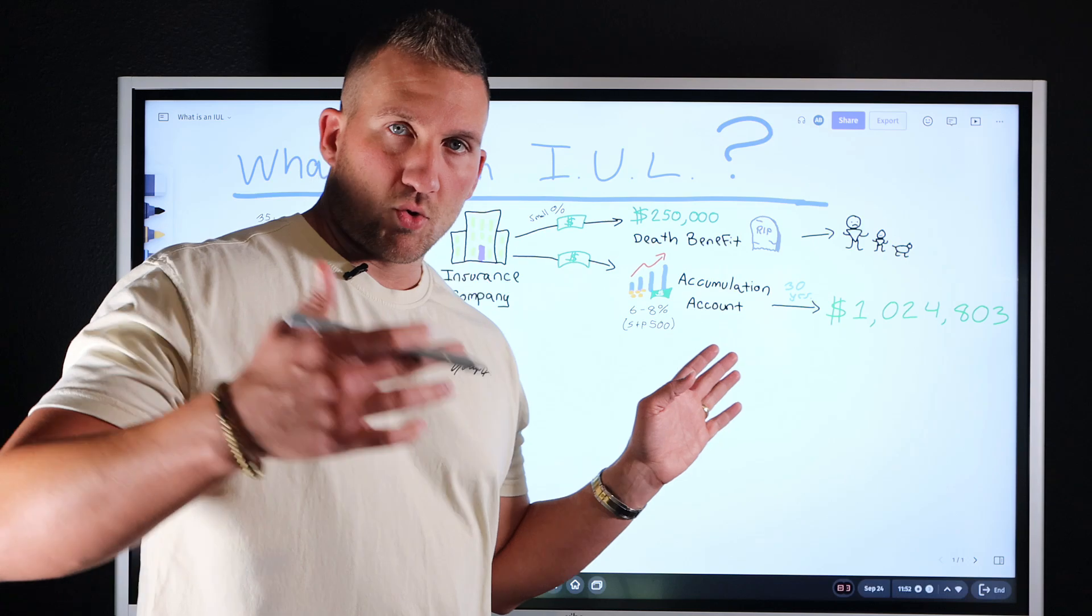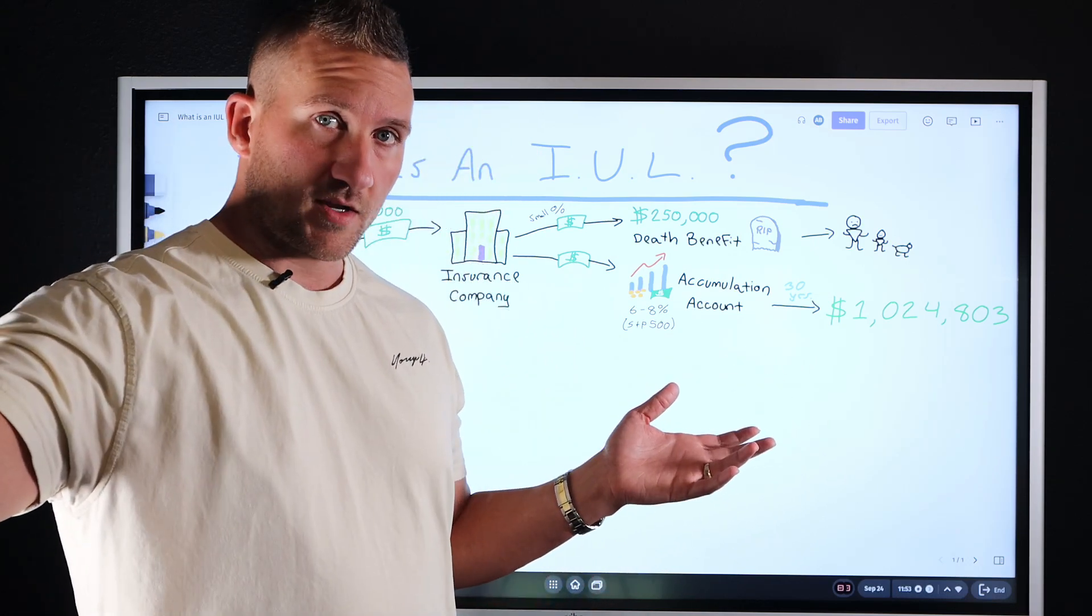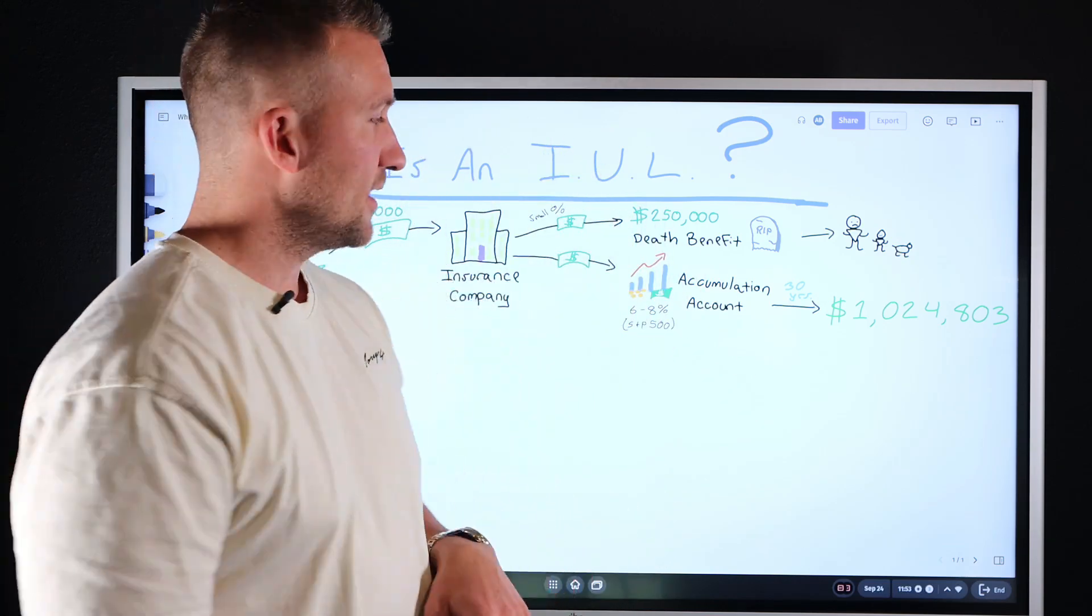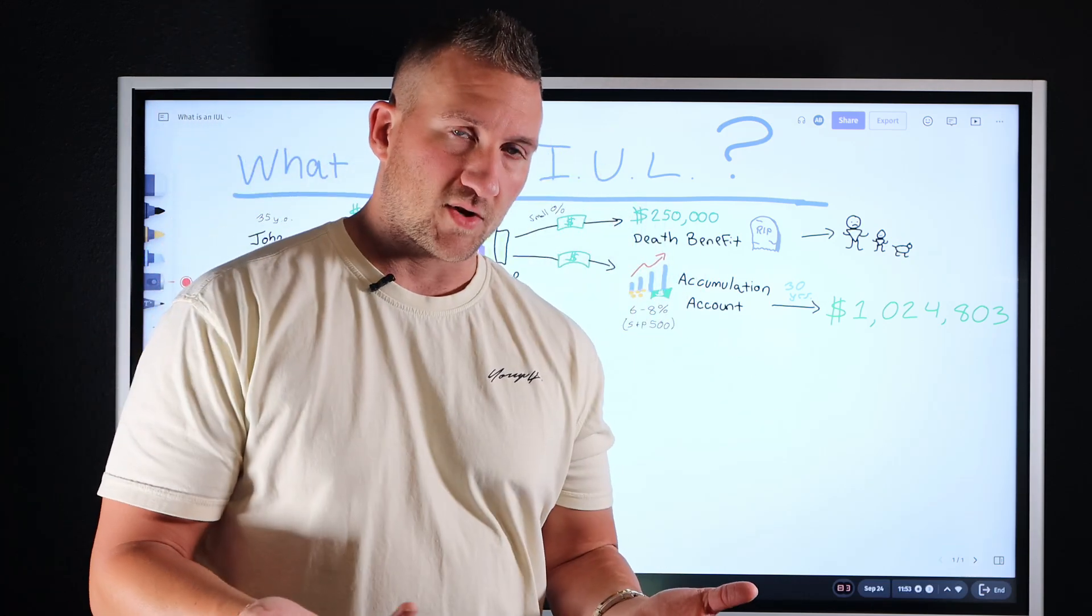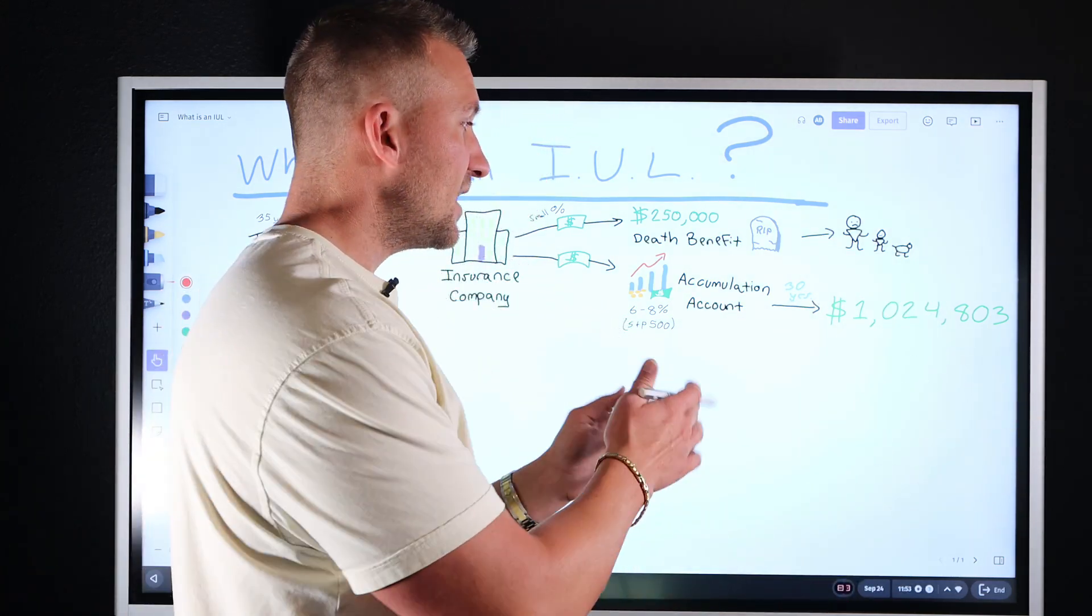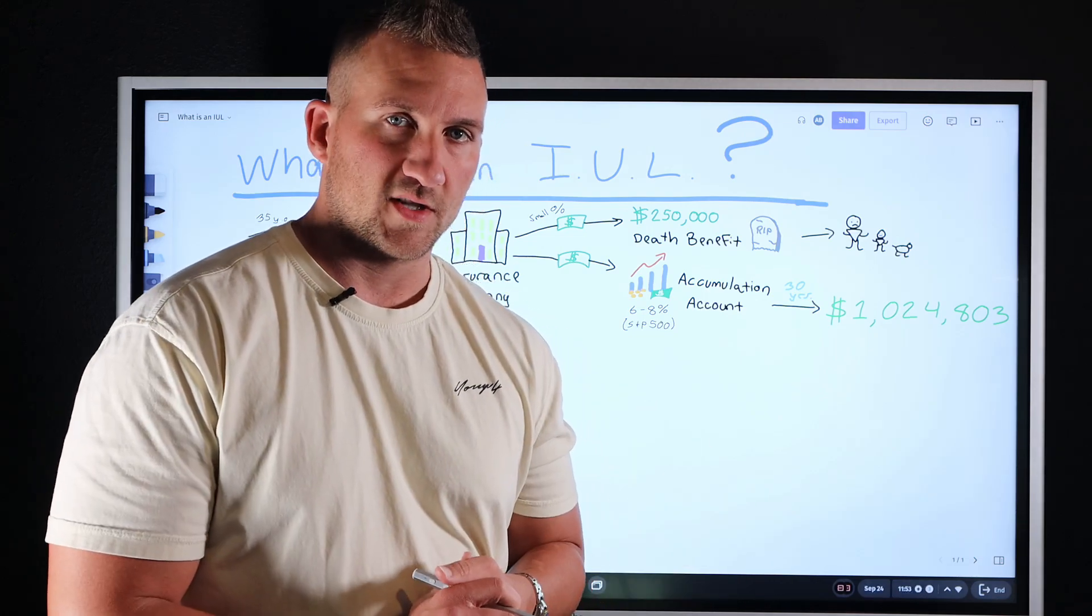So some people are like, hey, I could get more in stocks or directly in the stock market. That is true, right? You usually are going to get one to two percent higher directly in the stock market. But in a direct stock market comparison, you're subject to, you're exposed to market volatility. In a cash value life insurance policy, such as an IUL, you're not exposed to market volatility.